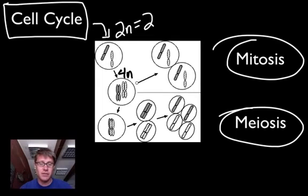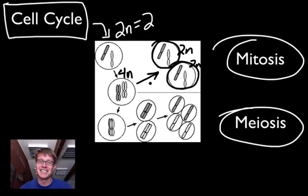In the path of mitosis that will simply split in half and now we will have 2 2n cells. And if you look at these 2 cells, 2 2n cells, they're exactly the same as that first cell. So this is what's happening to the chromosomes.